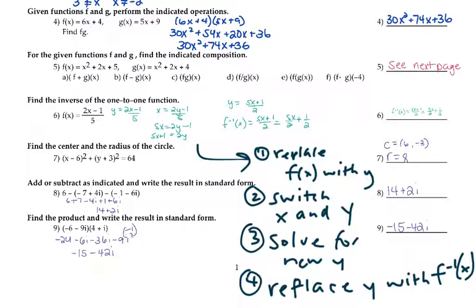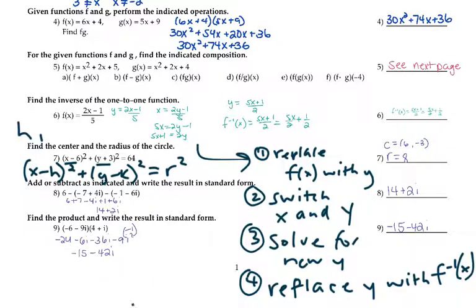Number 7 is the center and radius. The center comes from the parentheses. If the equation is (x minus h) squared plus (y minus k) squared equals r squared, then the center is (h, k) — you change the sign on both what follows x and y. Then square root the number by itself. The square root of 64 would be 8.